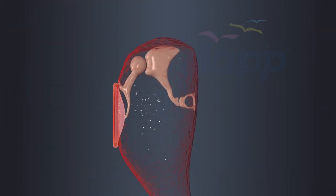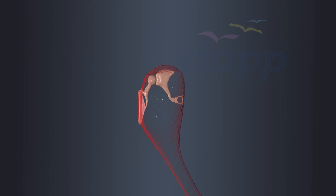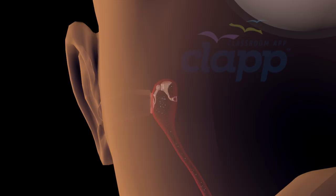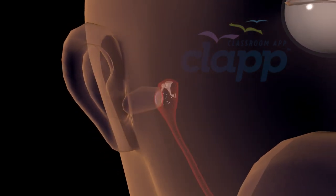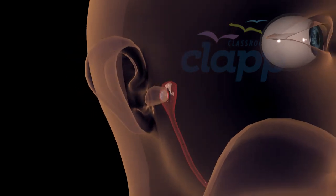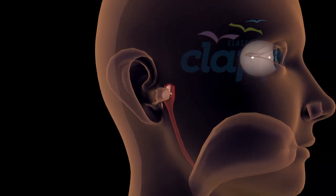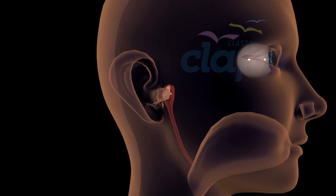Eustachian tube is also known as auditory tube. It is a narrow passage that connects middle ear with pharynx, which is the upper back of the throat situated behind nasal cavity. Eustachian tube is approximately 3.5 to 4 cm long and is lined with mucous chambers.